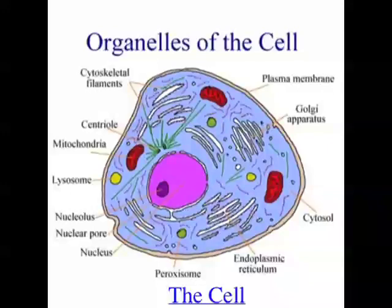All cells have some similar characteristics. All cells have a plasma membrane — this is kind of the outside of the cell and keeps the cell together. All cells have cytoplasm, which is the stuff inside the cell, and all cells also have DNA. Some cells have DNA inside something called a nucleus, and some cells just have free-floating DNA. Think of a water balloon: the plasma membrane is like the rubber balloon part, the cytoplasm is like the water inside, and the DNA — well, cells have DNA in them and it controls the cell. So all cells have a plasma membrane, cytoplasm, and DNA.